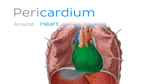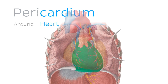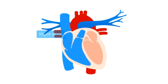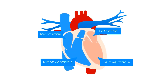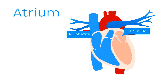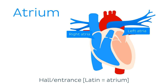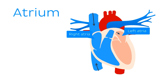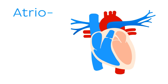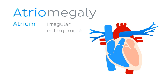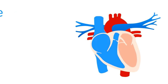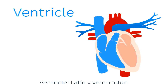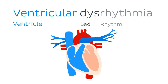And we have the pericardium, which is the envelope of fibrous tissue which surrounds and encloses the heart. The heart is divided into four chambers: two atria and two ventricles. The term atrium comes from the Latin word for hall or entrance, which makes sense as this is where blood is received or enters your heart. The root form of atrium in clinical terms is atrio, as in atriomegaly, an abnormal enlargement of the atrium. The term ventricle comes from the Latin ventriculus, meaning a small belly or chamber. Ventricular dysrhythmia is a disturbance of normal heart rhythm arising in the ventricles, also known as arrhythmia.